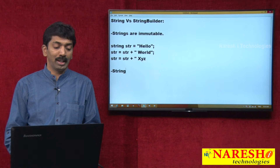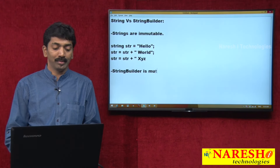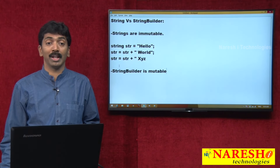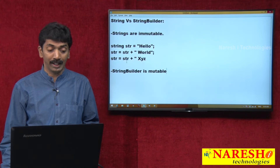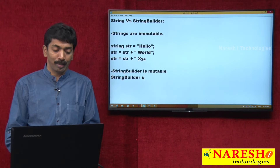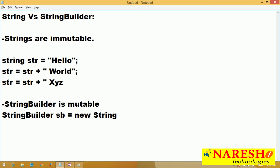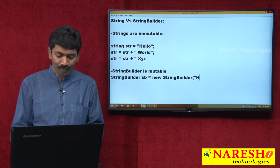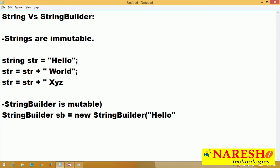Because StringBuilder is mutable — mutable means you can make modifications to this. You can make modifications to the data. How do you create a StringBuilder? StringBuilder sb equals new StringBuilder. We are creating a StringBuilder like this. If you want to give a default value, you can give the value "hello".